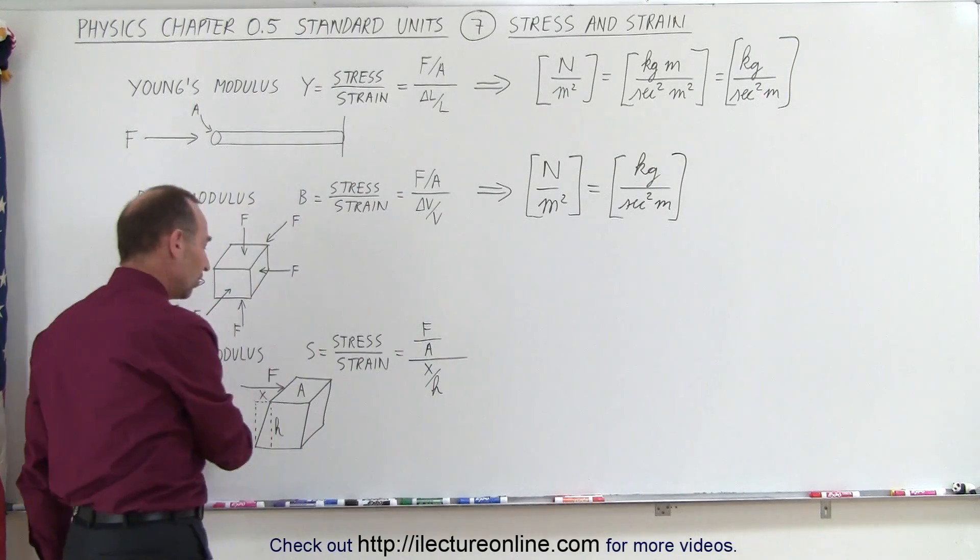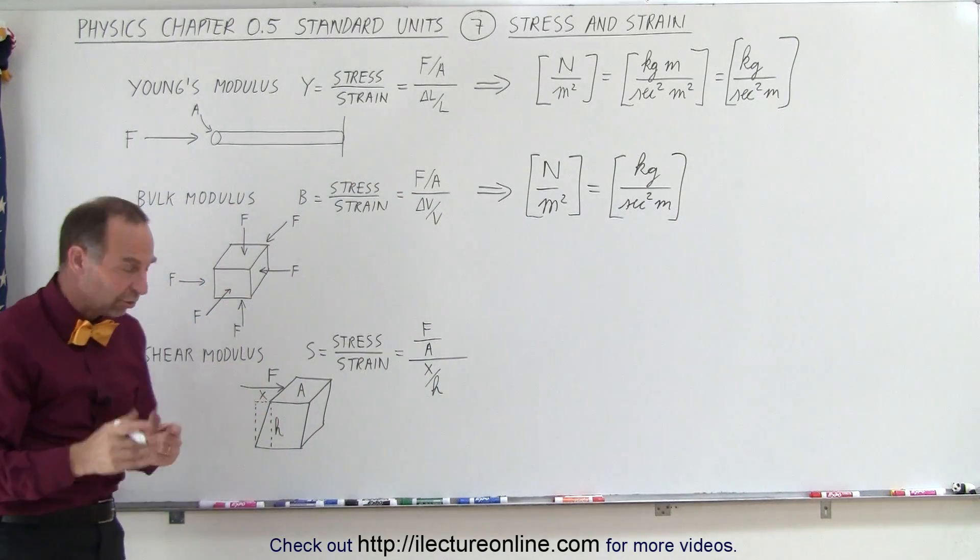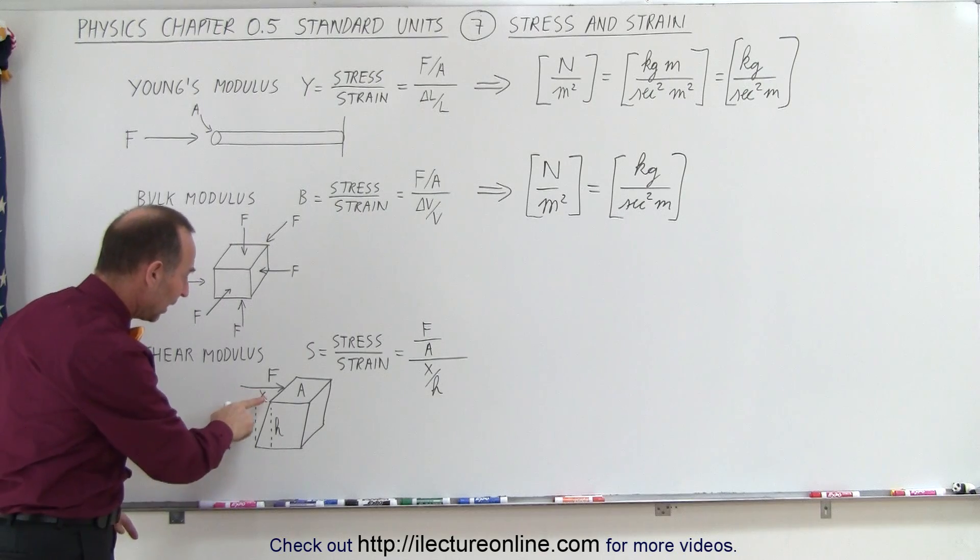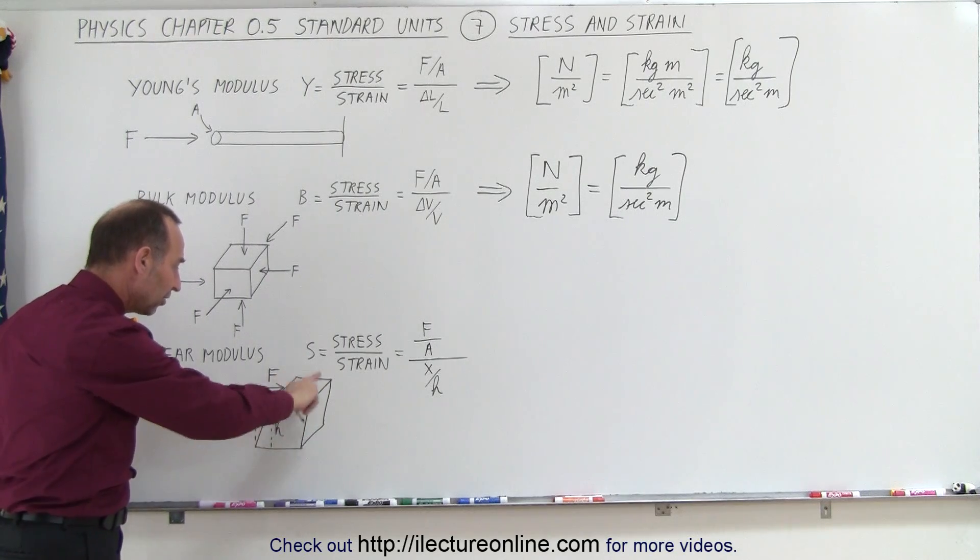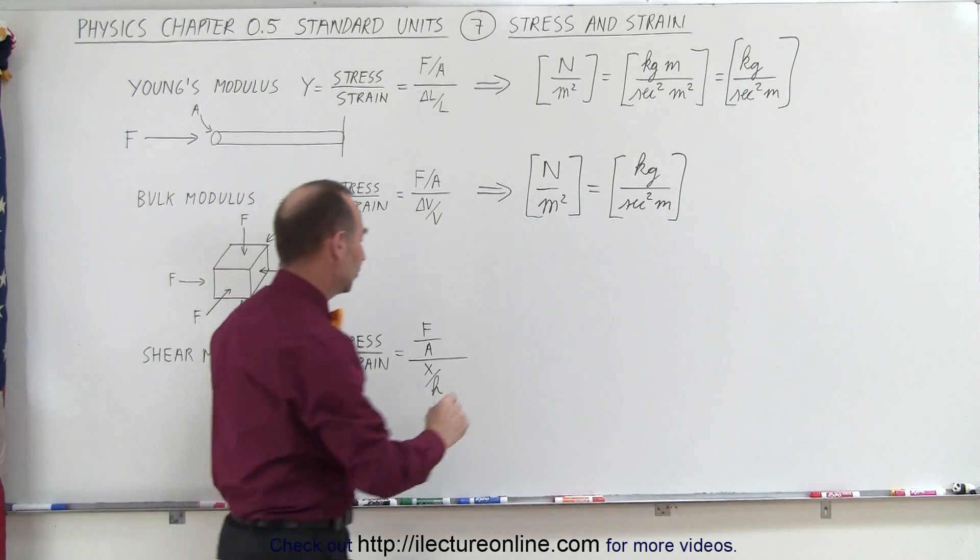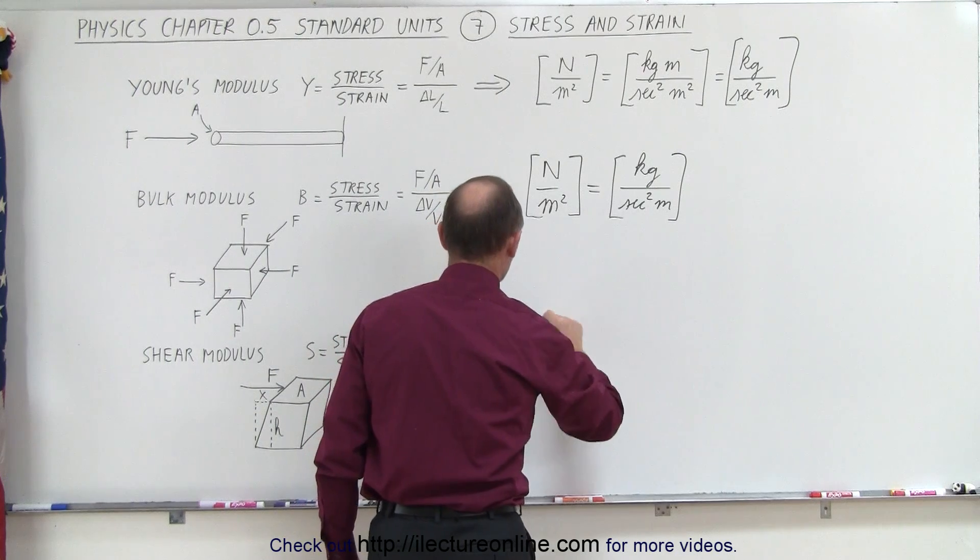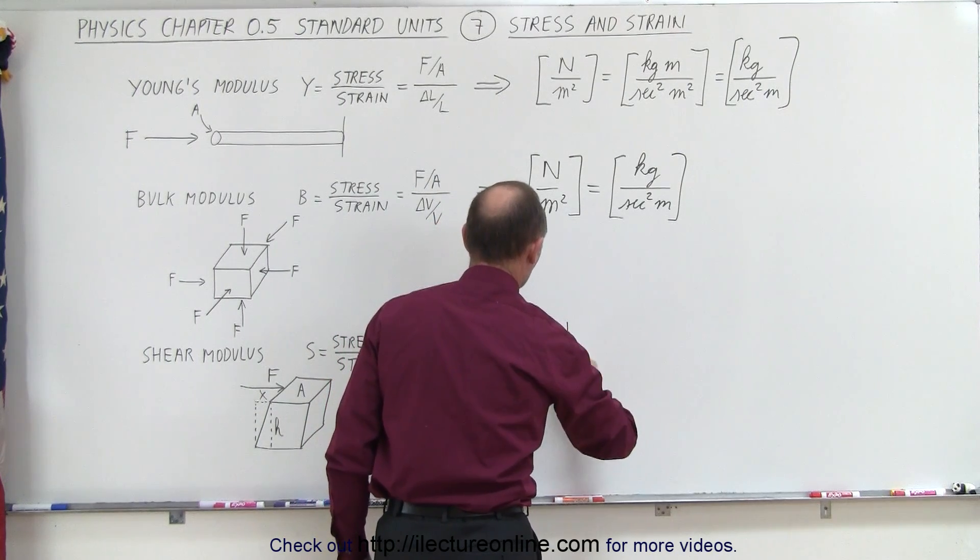When we talk about shear modulus, again, no difference, although the geometry is a little bit different. It's the force applied divided by the cross-sectional area at the top. And so the units here again are going to be Newtons per square meters.